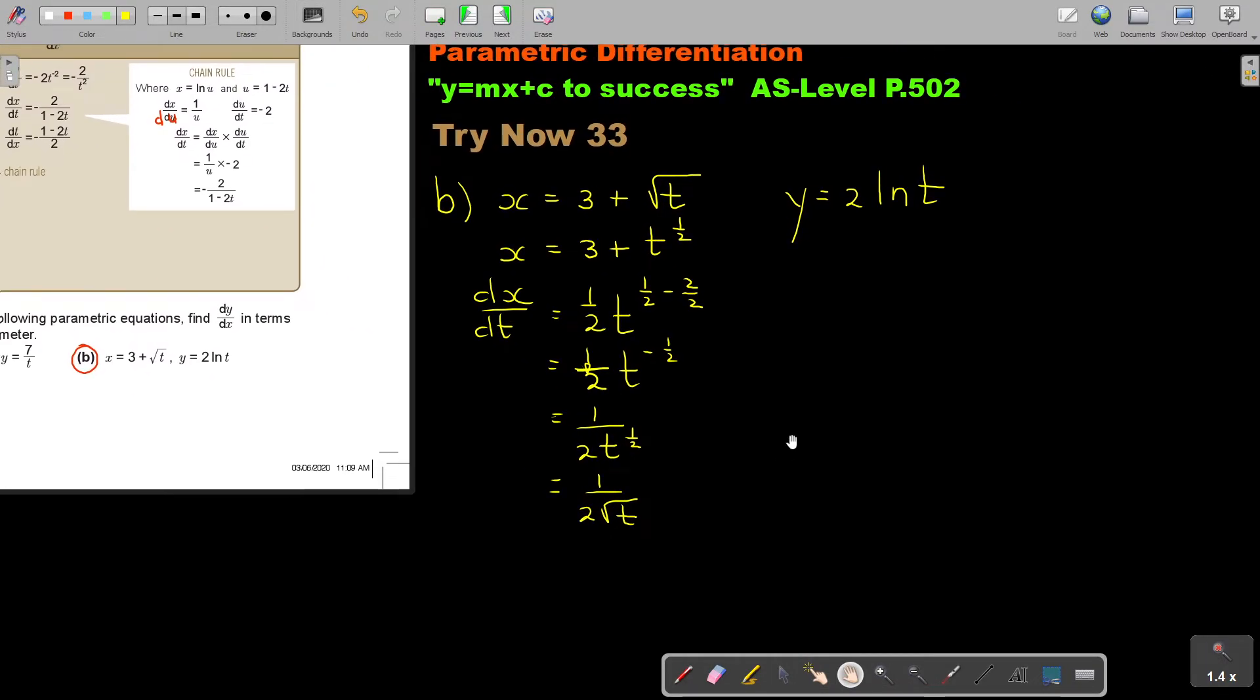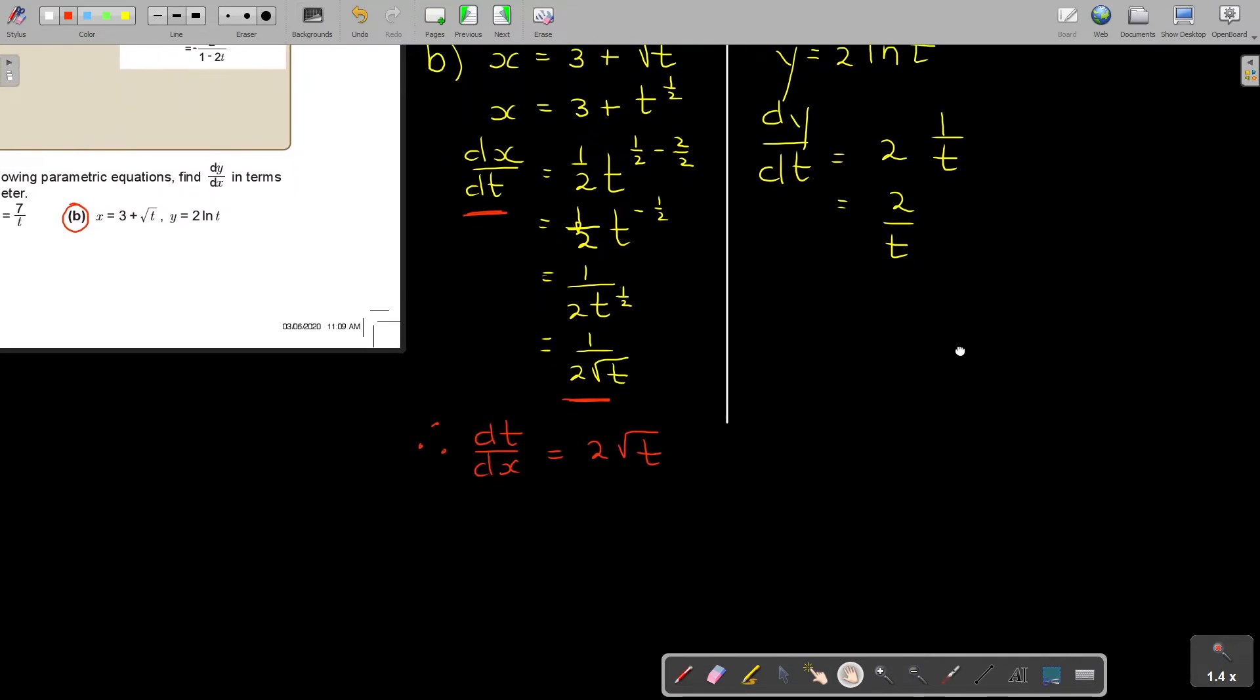Let's do this one also. So in this case, dy over, concentrate again on top, dt. And it's 2, and it's 1 over t. So it's 2 over t. Now, which one must I swap around? Always the 1. This is the 1 that I'm going to swap around. So therefore, dt over dx equals, if I swap it around, 2 square root t. And now I'm going to use my chain rule.